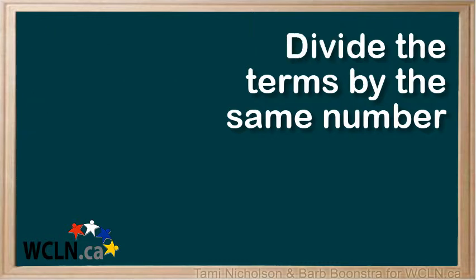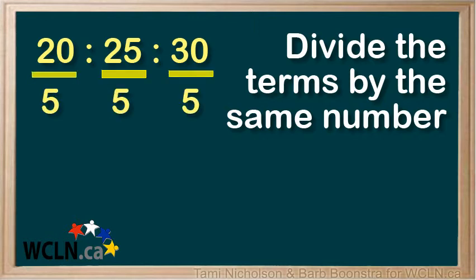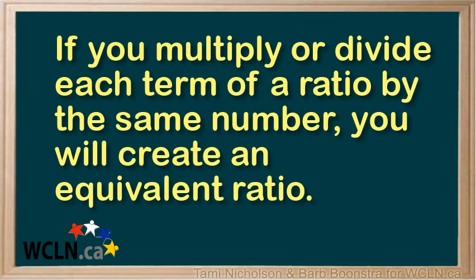This works with division as well. Let's start with the ratio 20 to 25 to 30. We can divide each term of the ratio by 5. 20 divided by 5 is 4, 25 divided by 5 is 5, and 30 divided by 5 is 6. So 4 to 5 to 6 is an equivalent ratio to 20 to 25 to 30 because each term in the ratio has been divided by 5.